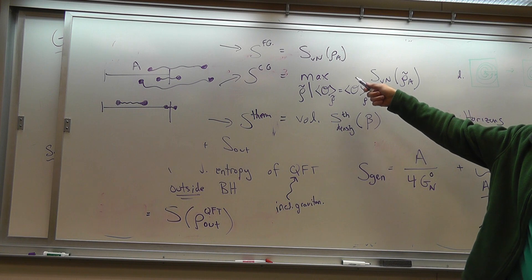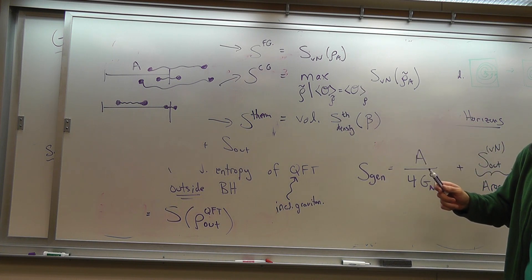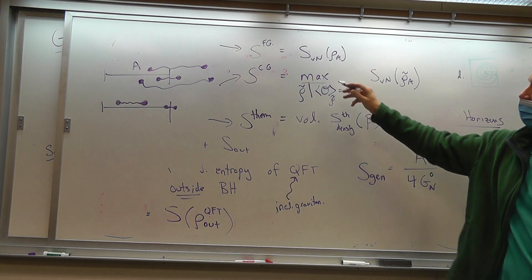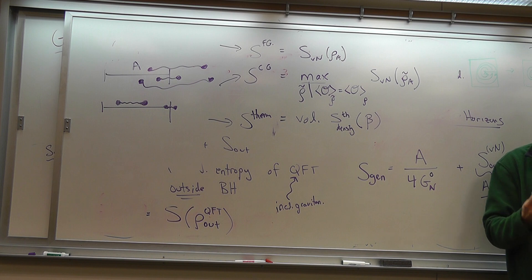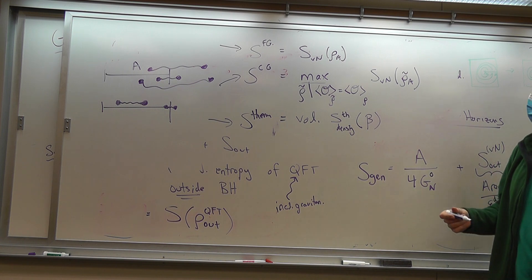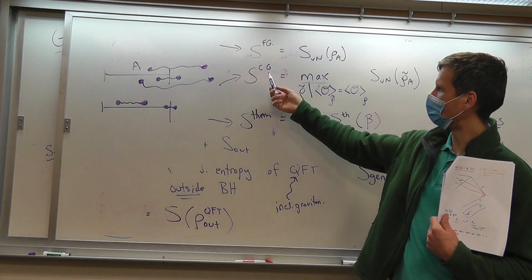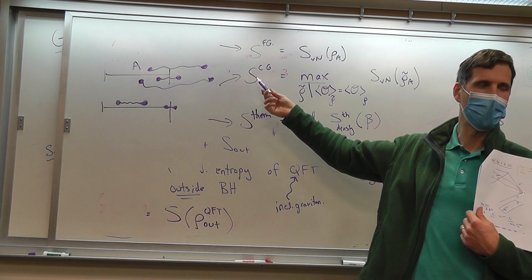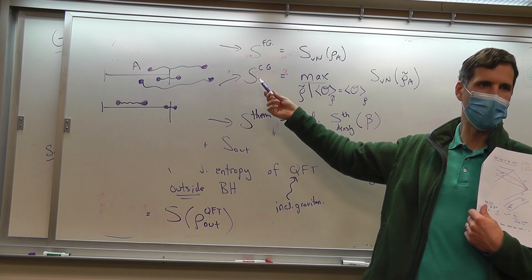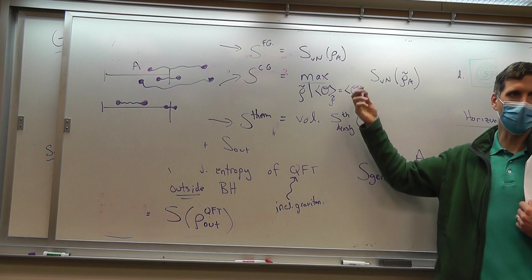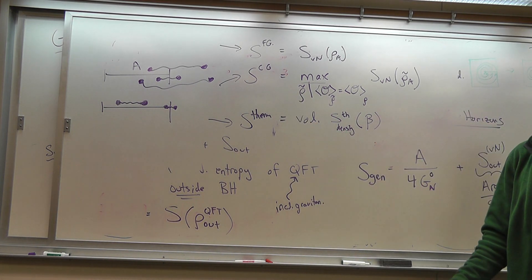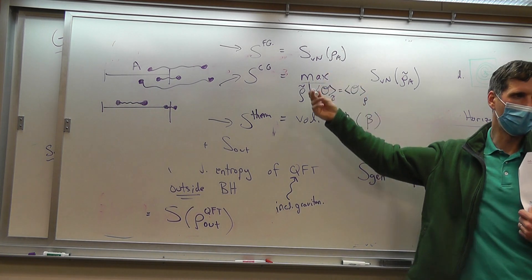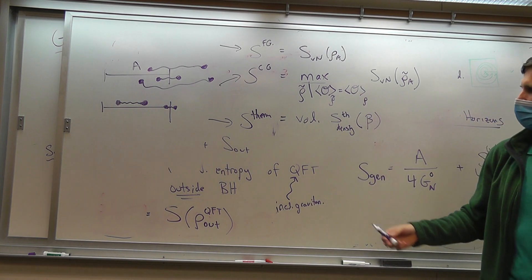If we did the coarse-graining correctly, the coarse-grained entropy would just be the von Neumann entropy of the thermal state reduced to region A, if our coarse-graining was defined by fixing energy. It might depend a little bit on the details of how we did the coarse-graining and the maximization procedure, but certainly its extensive part would be the thermodynamic entropy.